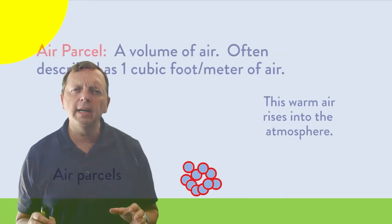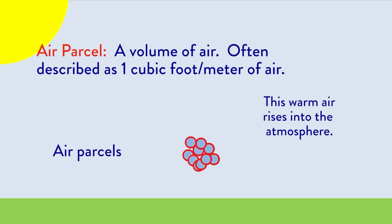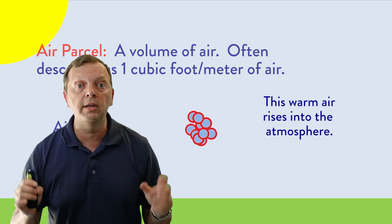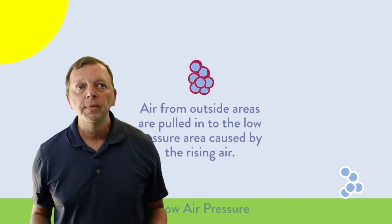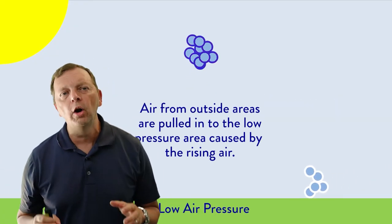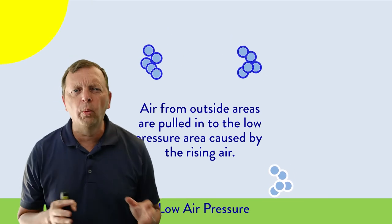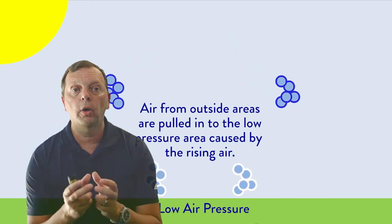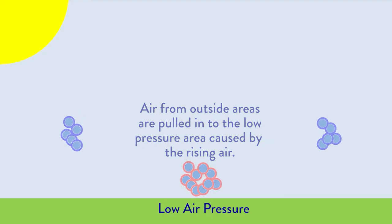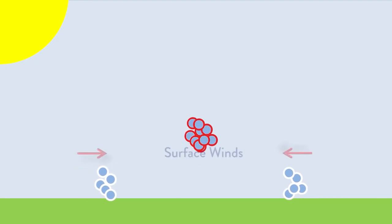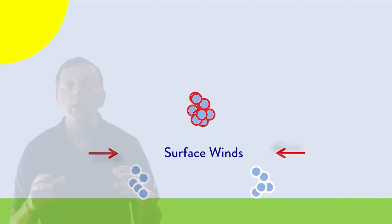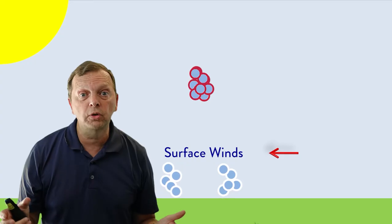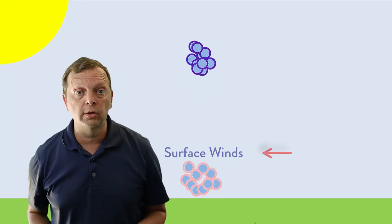If the heating of the earth's surface causes the air to rise into the sky, it has to be replaced. So what happens is this rising air creates a low pressure cell that kind of works like a vacuum cleaner. As these air parcels move up, it creates a low pressure area that begins to suck in air from surrounding areas. This air rushing into the low pressure area is what creates the surface winds that cause wind erosion, fill sails of ships, and even create storms.